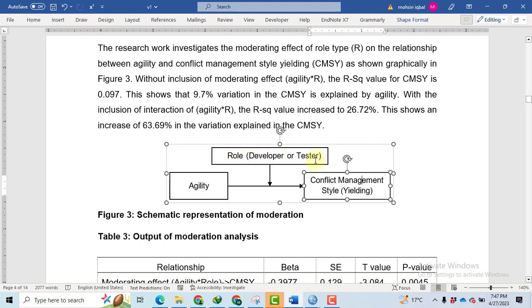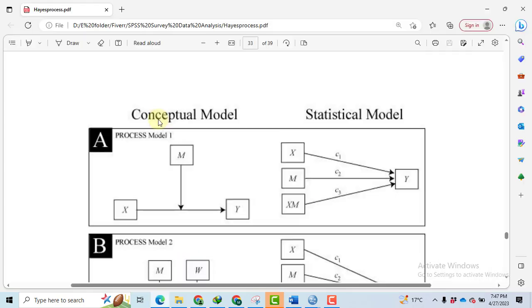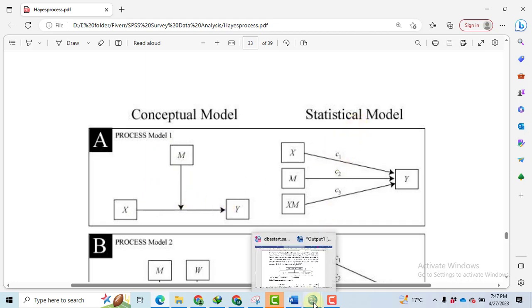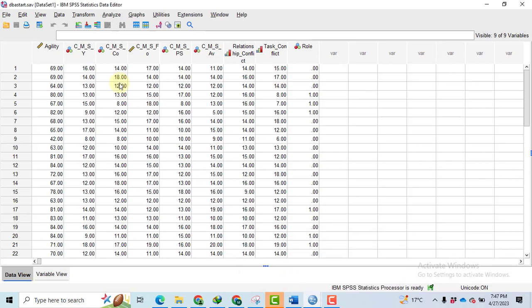It moderates the relationship between this independent and dependent variable. The conceptual model here shows the same moderator M, it moderates the relationship between X and Y, and this is the statistical model. Let's go towards SPSS to perform the analysis.